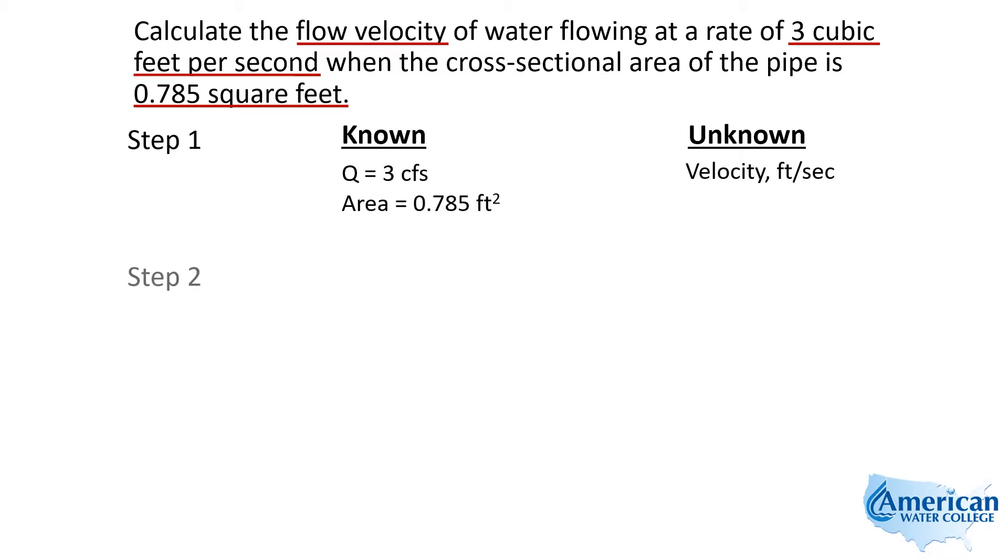So with that, we can take our formula that says flow rate equals area times velocity. We know that we're looking for velocity, so we'll move on to step 3 where we rearrange the formula. The flow rate divided by the area will equal the velocity.